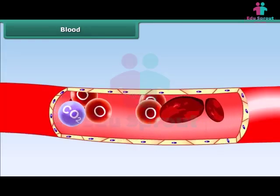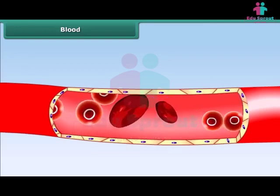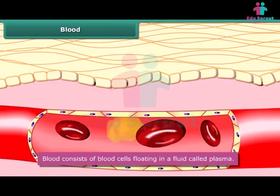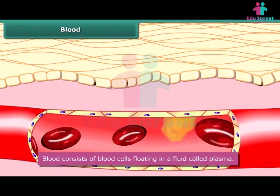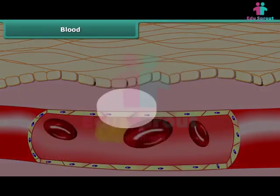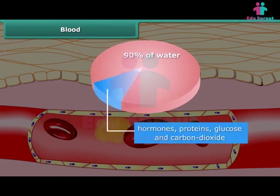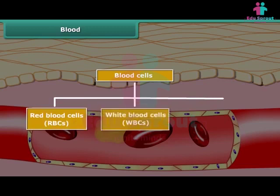Blood is a fluid that is essential for our survival. It carries oxygen and nutrients to body parts, and also carries waste away from body parts for removal. Blood consists of blood cells floating in a fluid called plasma. Plasma is yellow in color and 90% of it is water. Besides water, plasma contains hormones, proteins, glucose and carbon dioxide. There are three types of blood cells: red blood cells (RBCs), white blood cells (WBCs), and platelets.